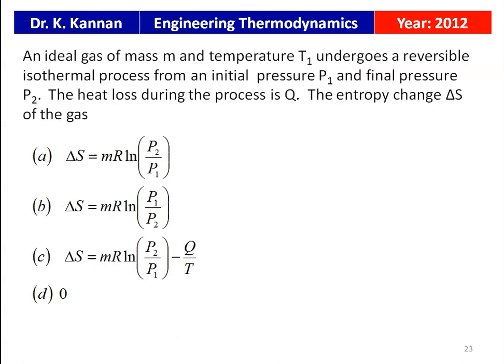From the 2012 question paper: an ideal gas of mass m at temperature T1 undergoes a reversible isothermal process from pressure P1 to P2, with heat loss Q. The entropy change ΔS is given by option B: ΔS = mR·ln(P1/P2). That is the correct answer for an isothermal process.